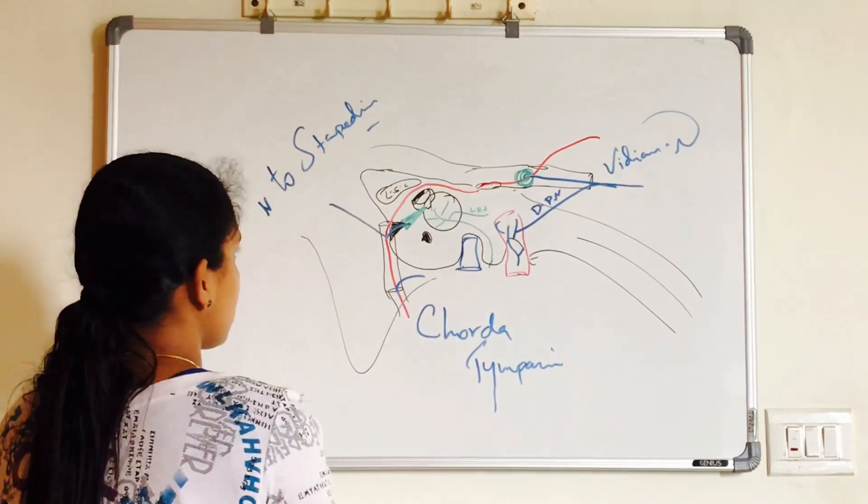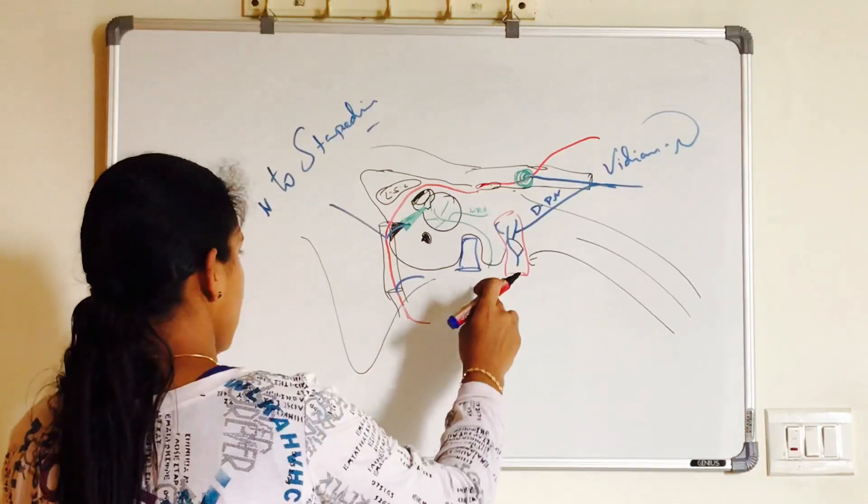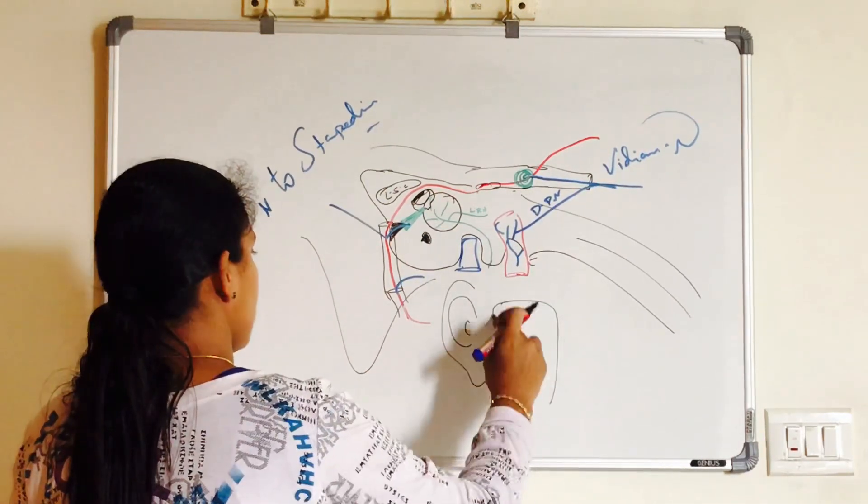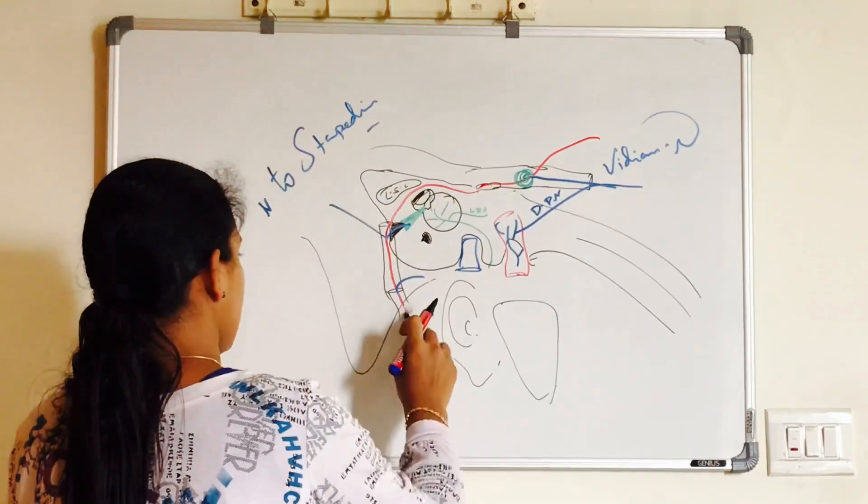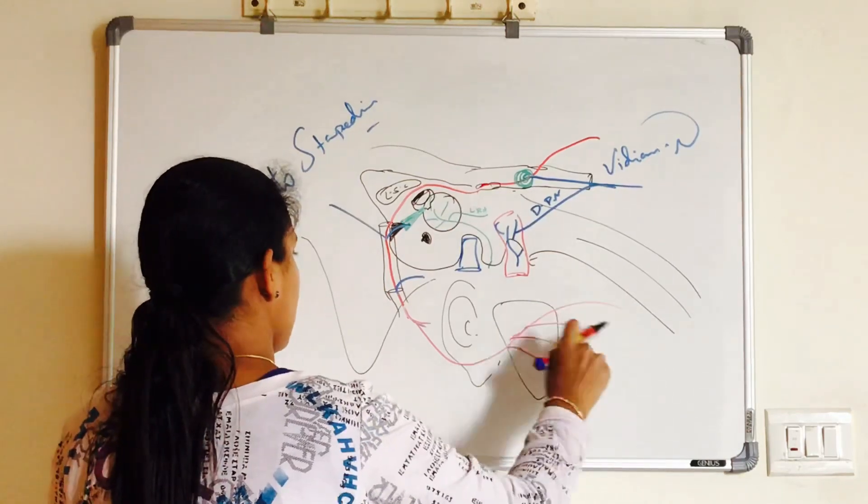Let us see in detail about all the branches of facial nerve. Once it comes out, it is called extracranial course which passes into the parotid gland, divides into five branches to supply the muscles of face.